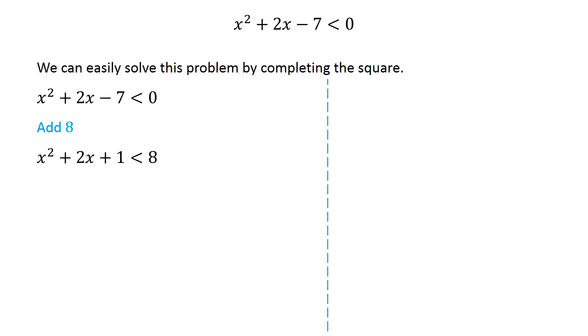The quantity on the left side is the expanded form of x plus 1 whole square. Since all the values in this inequality are non-negative, we can take the principal square root.